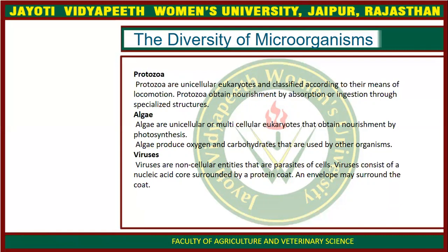Next is Algae. Algae are also included in the Kingdom Protista. Algae are unicellular or multicellular — both. They are eukaryotes. Algae produce oxygen and carbohydrates that are used by other organisms.